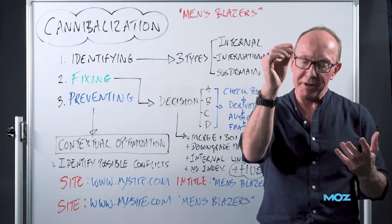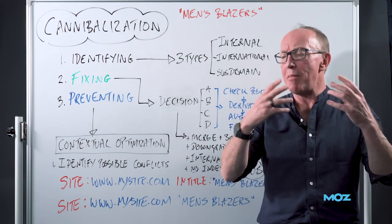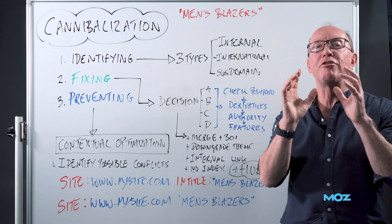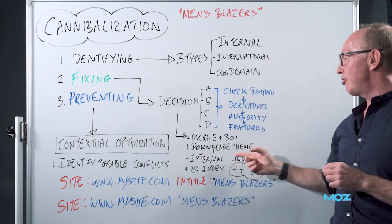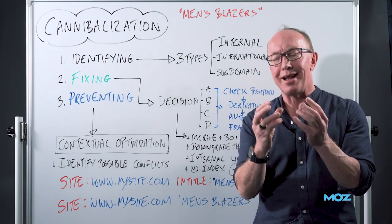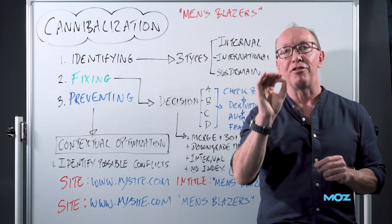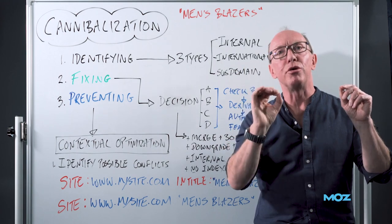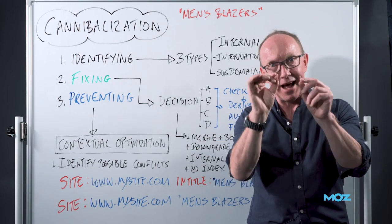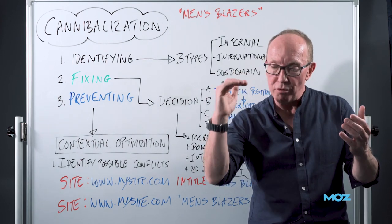Another option is to downgrade the theme. How do you downgrade the theme? Remember the title is the strongest element on the page — we can change the title so it's not about men's blazers; we can say 'men's outfits for the summer,' if appropriate. But let's not do that if that page positions in its own right, because we don't want to lose that traffic. We can also check the traffic to the page. We can also internally link — if we decide that page A is the doorway, let's give it the authority it needs to position. Let's link internally from B, C, and D to A using the anchor text 'men's blazers,' telling Google this page is all about men's blazers. We also have the option to noindex, if appropriate.